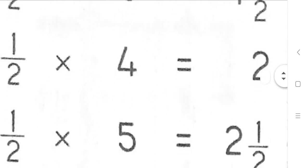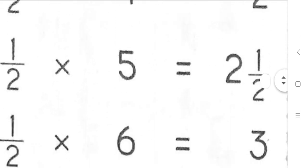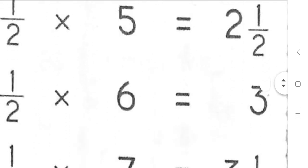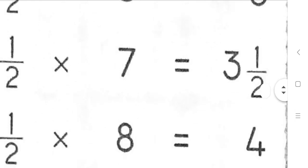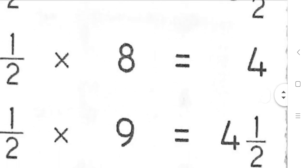Half of 5 is 2 and a half. Half of 6 is 3. Half of 7 is 3 and a half. Half of 8 is 4. Half of 9 is 4 and a half.